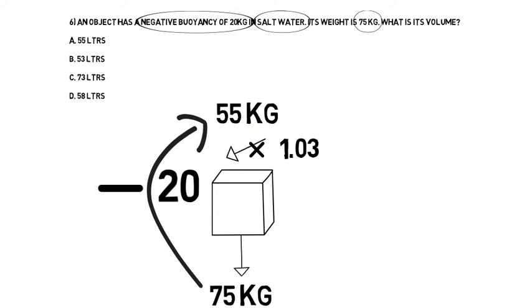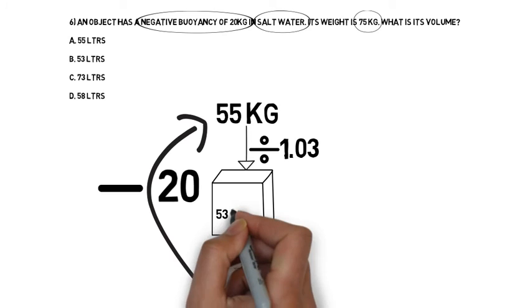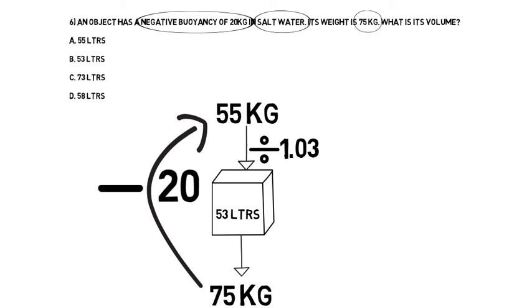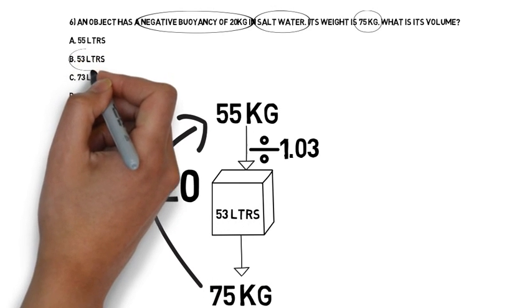I'm going to inverse my arrow. I have the upward force and want the volume. If I'm inversing the arrow, I need to inverse the multiplication sign. The opposite of multiply is divide. So 55 divided by 1.03 will give me the volume. 55 divided by 1.03 is rounded to 53 liters. The correct answer is B.